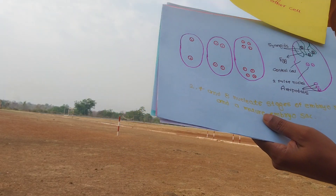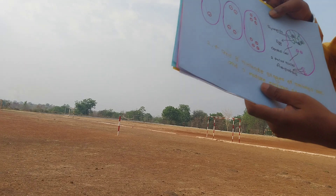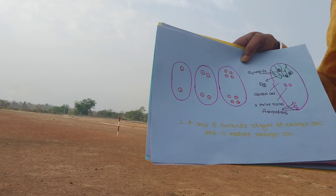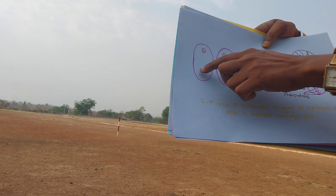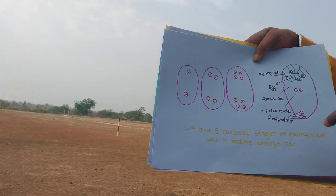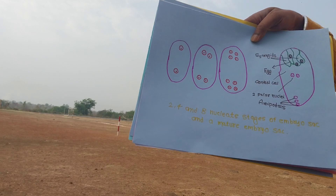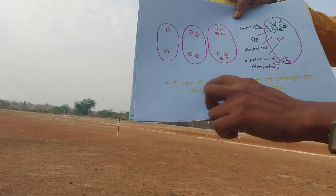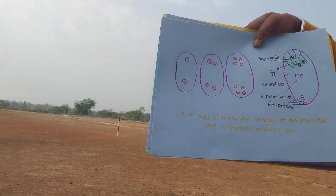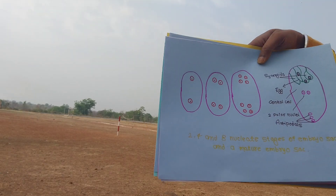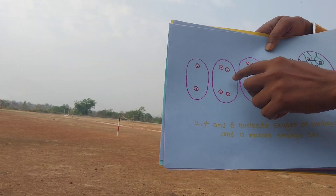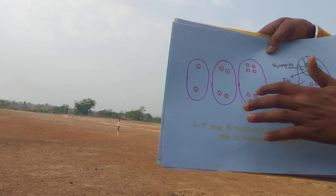The functional megaspore then divides: one becomes two, two becomes four, and four becomes eight — these are the two-nucleate, four-nucleate, and eight-nucleate stages of the embryo sac. So the embryo sac is formed from the functional megaspore through successive nuclear divisions: 1→2→4→8 nuclei.